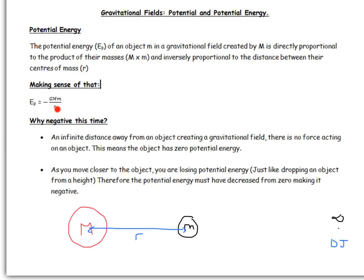So why is this negative? Well, if you go a distance infinitely far away from an object, you're not in its field, so you're not experiencing a force. That means you have zero potential energy, because you don't have the potential to move anywhere.